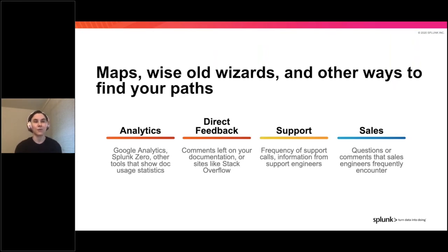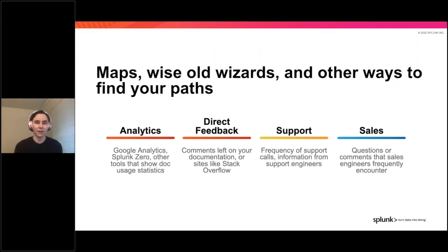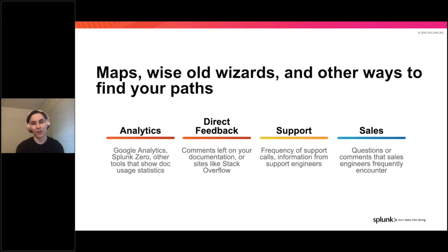The first one is analytics, or usage data for your documentation — you can get this through Google Analytics, but I'm also going to talk about something I use called Splunk Zero, and any other tool that shows usage statistics for your documentation. Also useful is direct customer feedback, whether through a simple conversation, email, or through sites like Stack Overflow. I've also interacted with support and sales, based on frequency of support calls on a topic or common questions that sales engineers encounter. You might not have access to all of these, but even using one or two of them can help you improve your docs.